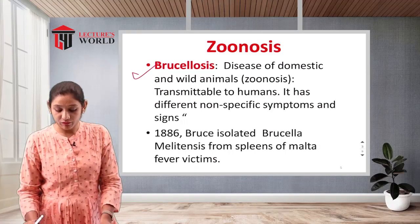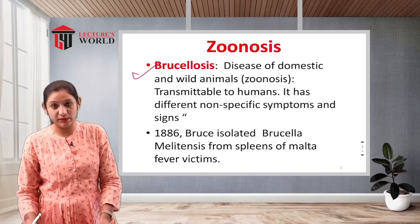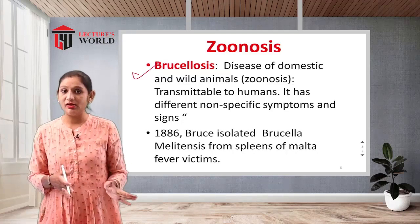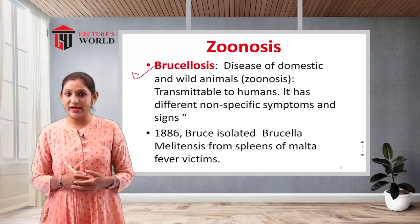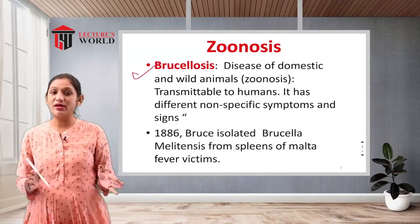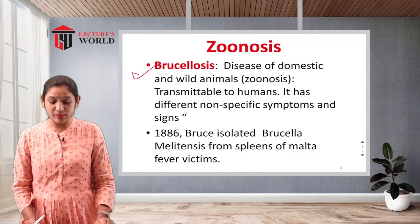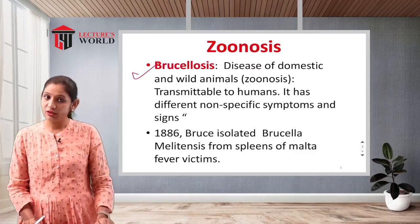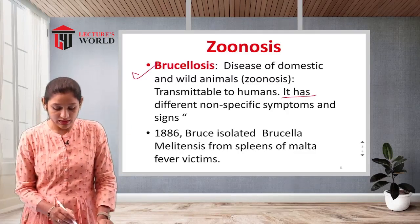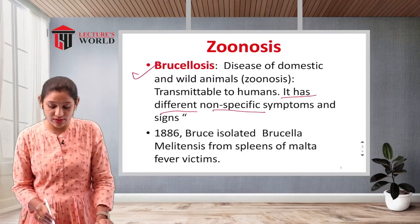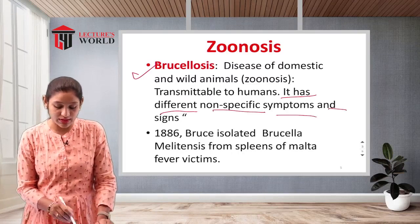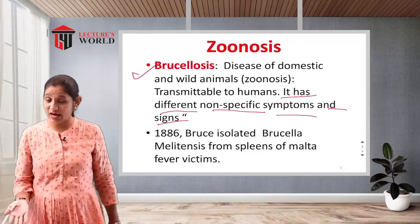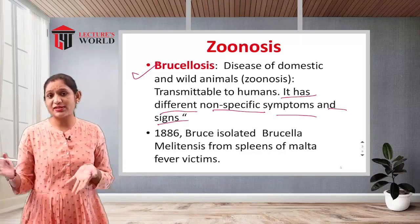Zoonosis is the broader category to which Brucellosis belongs. It refers to infections transmitted from domestic and wild animals to humans. These infections have different non-specific symptoms and signs — meaning there are no highly specific symptoms unique to this disease in humans.